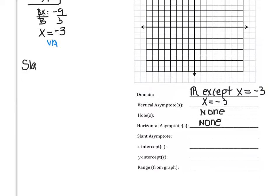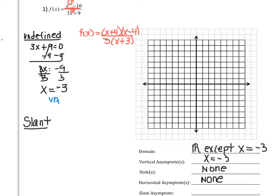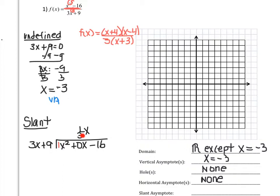To find the slant, we divide the original fraction. So we have 3x plus 9 dividing into x squared plus 0x minus 16 — we need a placeholder. So I want to see how many times 3 can go into 1. It goes in 1 third. So 1 third x. Now we multiply: 1 third times 3 is 1, so that will be 1x squared. And then 1 third x times 9 is 3x.